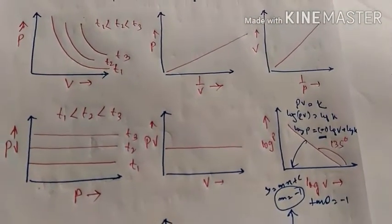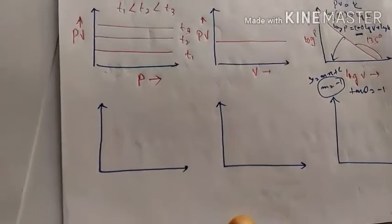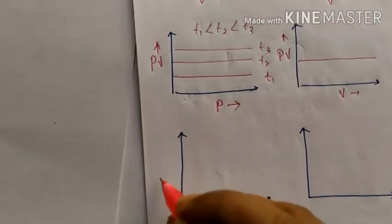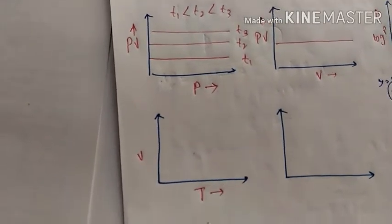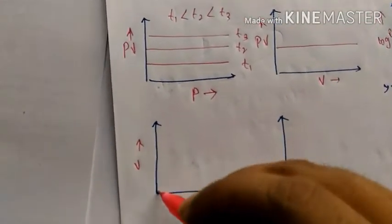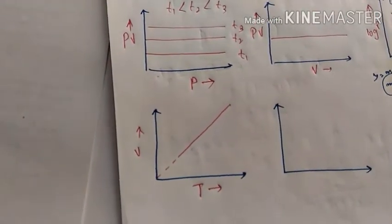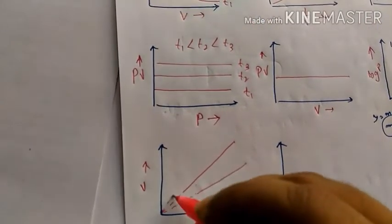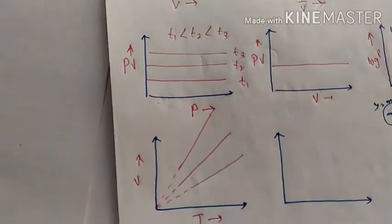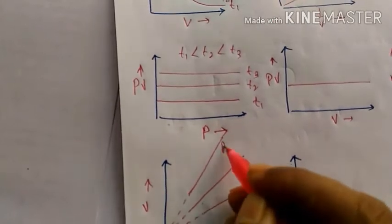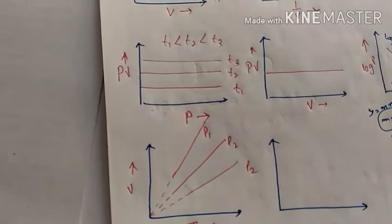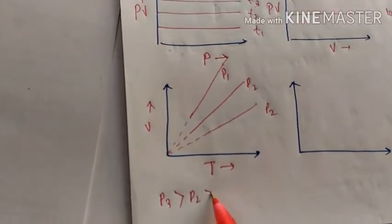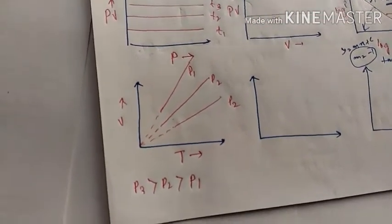Those are all six graphs from Boyle's Law. Now moving to Charles' Law: the V versus T graph is a straight line passing through the origin. At different constant pressures P1, P2, and P3, we get different straight lines, where P3 is greater than P2 is greater than P1.